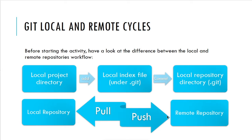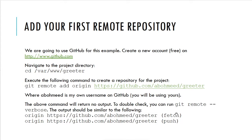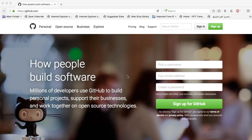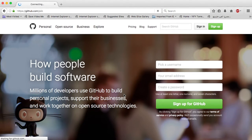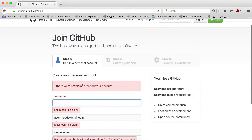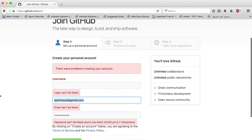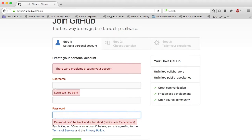Our first step to add a new remote repository is to create a free account on GitHub. GitHub will be our choice of public repositories available on the internet. Navigate to github.com — if you don't already have an account you can sign up for one. It is a very simple operation: just enter your desired username, your email address, and your chosen password.